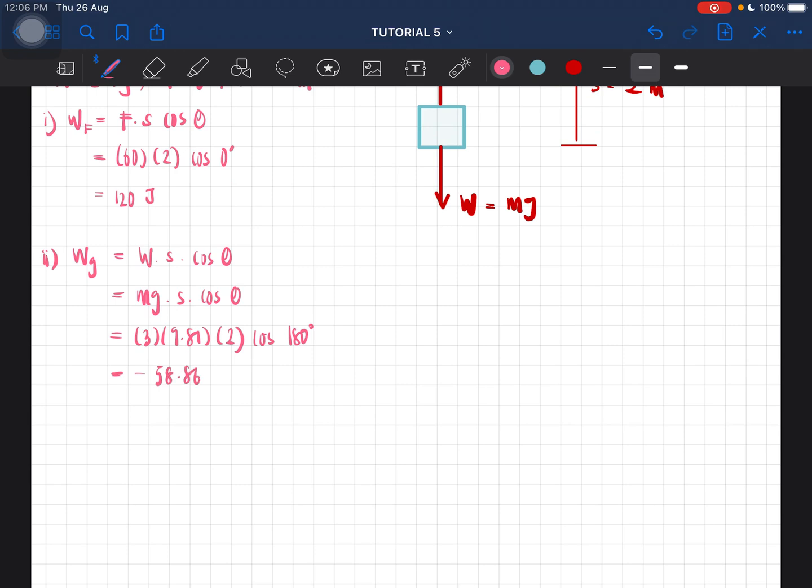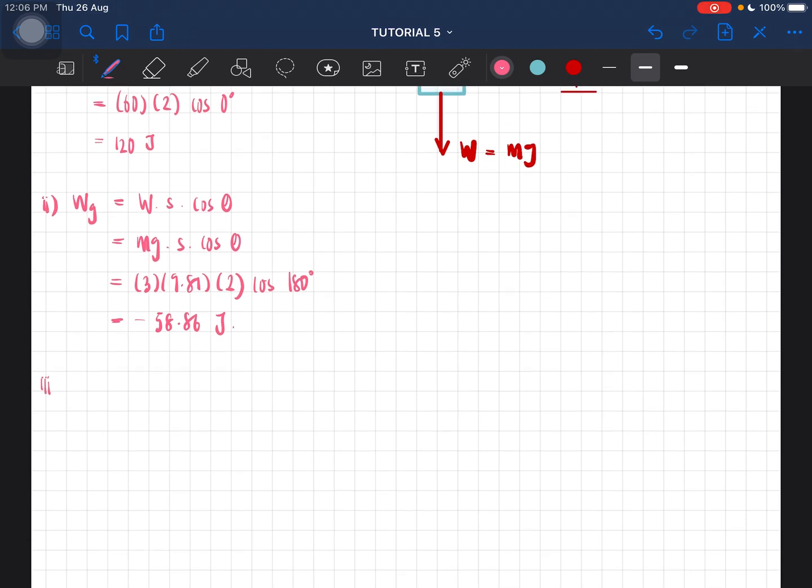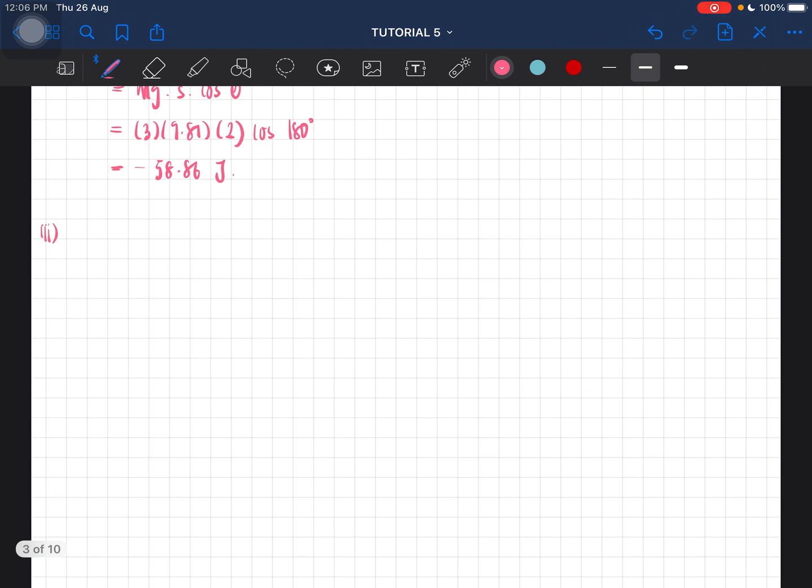Now the last question, we have to find the final speed of the block. For final speed of the block, we can then use the work-kinetic energy theorem. Delta K, so K_f minus K_initial, and then this is the total work done. So total work done is equal to half mv² minus half mu². However, we know that the block starts from rest, so this one would automatically equal to zero.